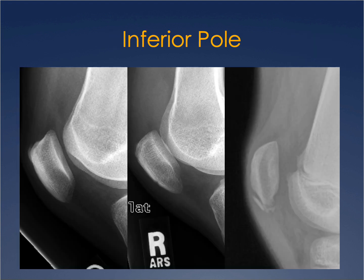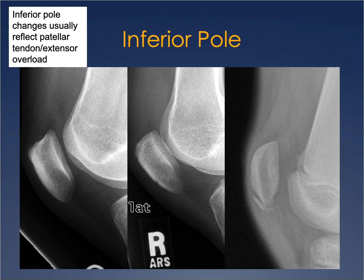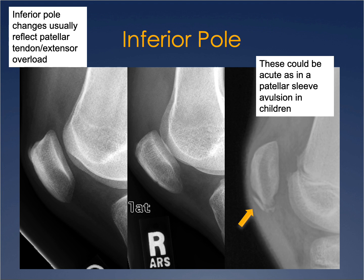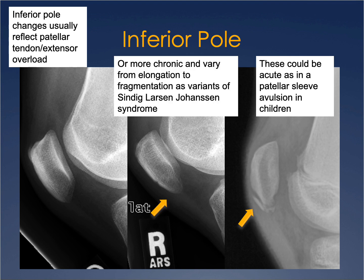The next area to focus on is the inferior pole of the patella. In young children in acute situations, you may see a patellar sleeve avulsion, where the patellar tendon avulses off the inferior pole pulling a little periosteum with it. In older people, you may see elongation of the inferior pole or fragmentation in Sinding-Larsen-Johansson syndrome. Changes along the superior and inferior pole of the patella usually reflect patellar tendon or extensor overload.